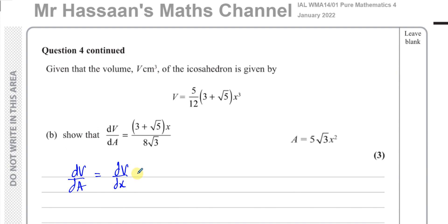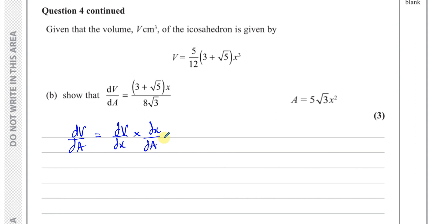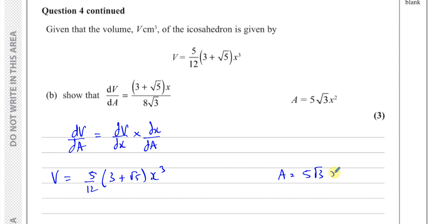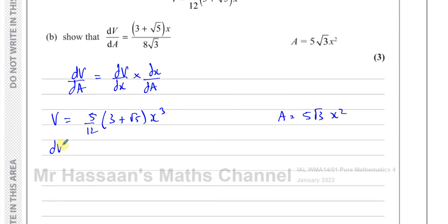To find dV/dA, I need to get rid of the x by writing dV/dA equals dV/dx times dx/dA. We have V equals (5/12)(3 + root 5)x³ and A equals 5 root 3 x². We want to find dV/dx: the bracket is just a constant, so we multiply by the power and take one from the power.